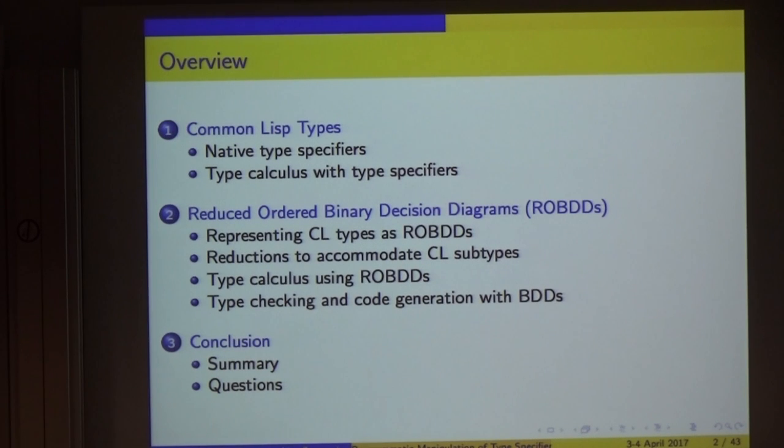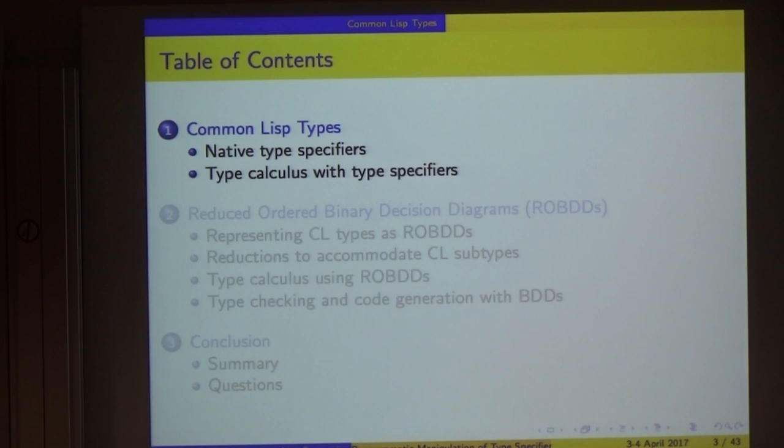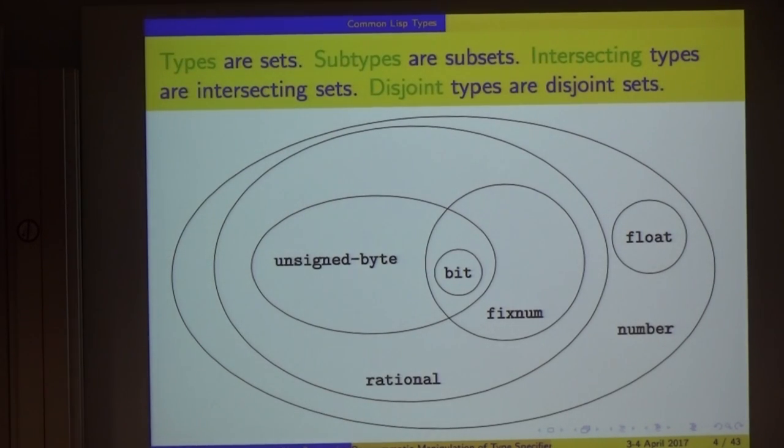The order of the talk is we're going to talk first about the ways that the specification natively describes how to manipulate types, and I'm going to look at this data structure called the ROBDD. Then how to do the same type of operations with BDDs as you do with type specifiers. Types in Common Lisp are defined as sets. A type such as float is the set of all objects in the language which are a float. And operations between types correspond to operations between sets.